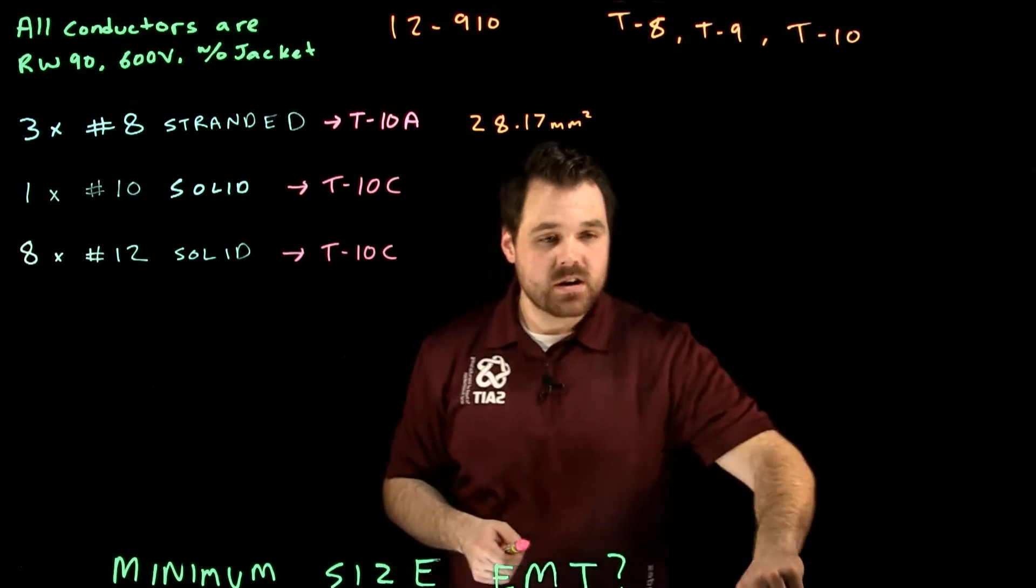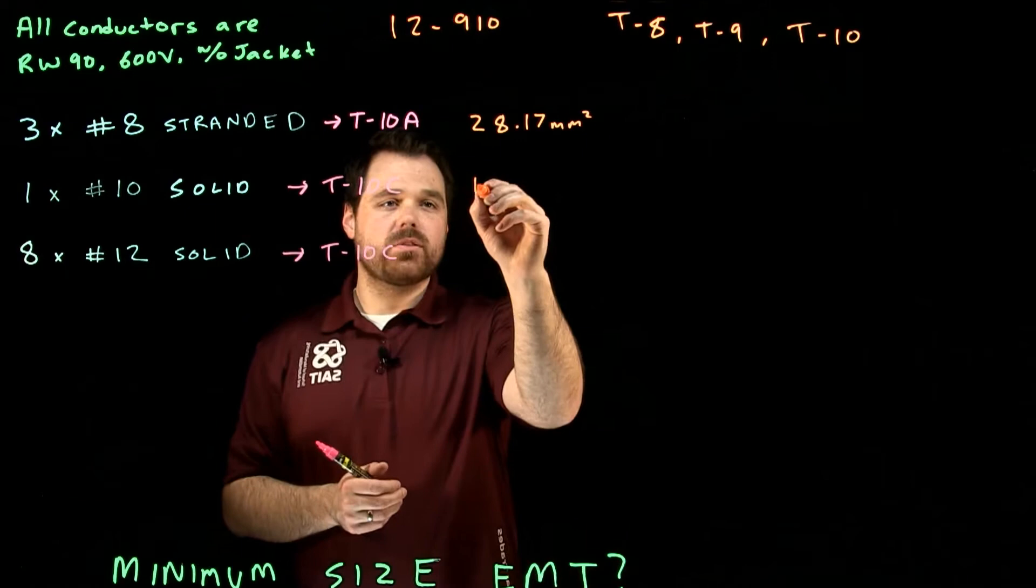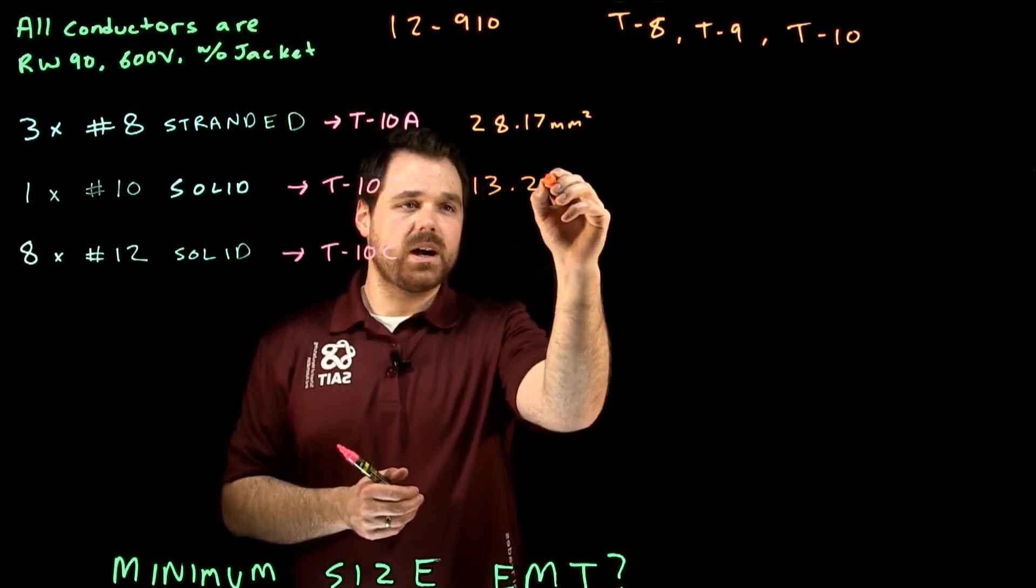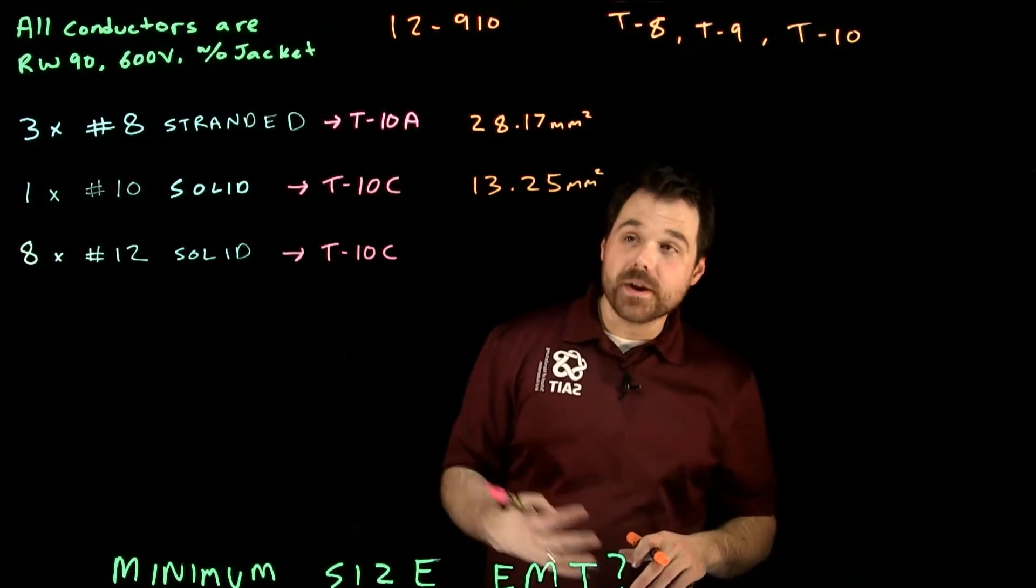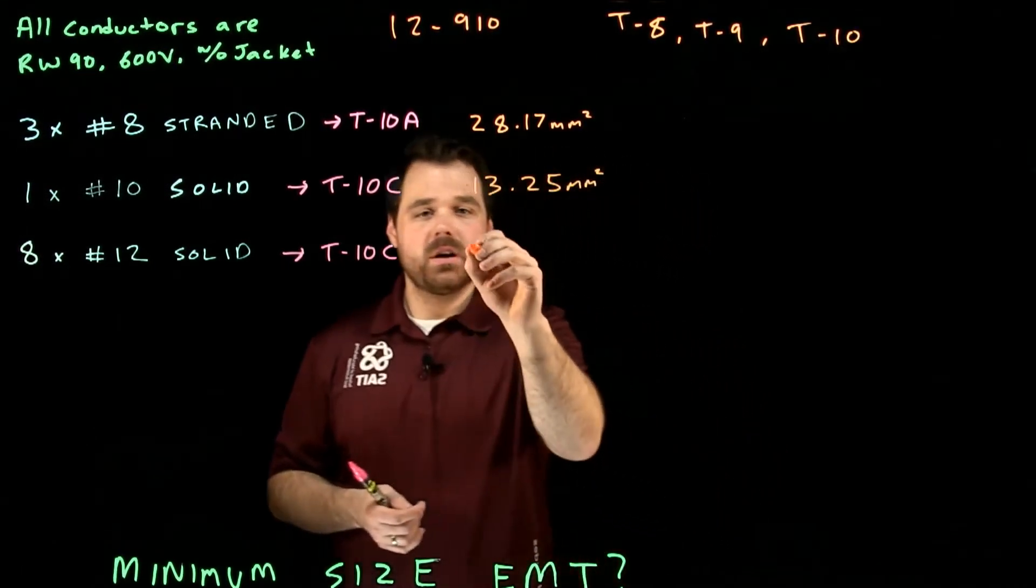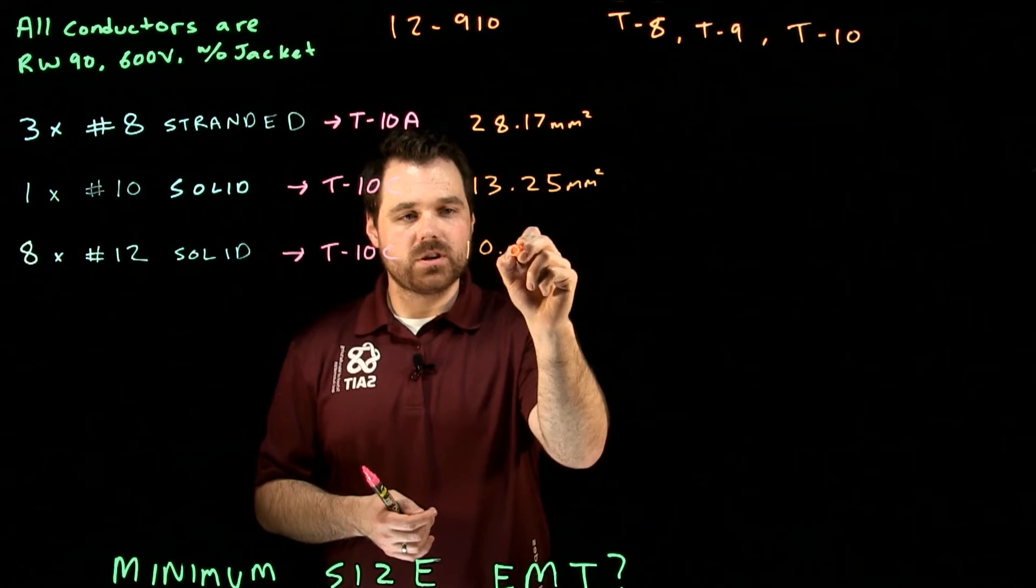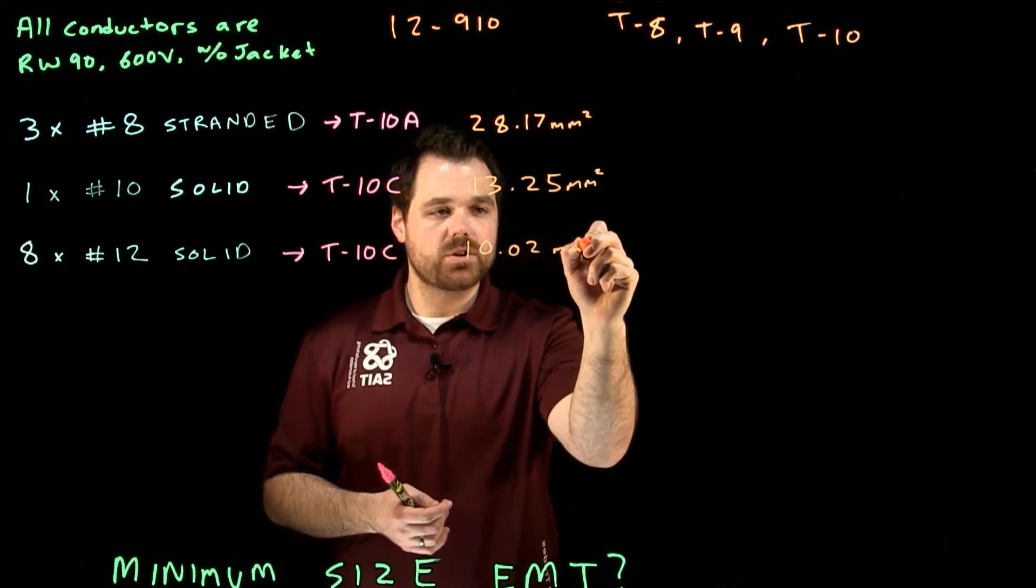So one number 10, we find out is good for 13.25 millimeters squared. That's how much space it takes up in the conduit. One number 12, this is just for one, takes up 10.02 millimeters squared.